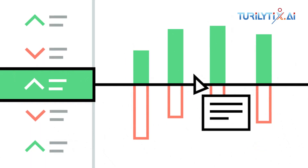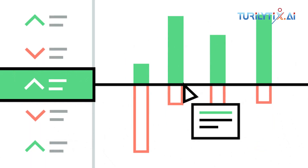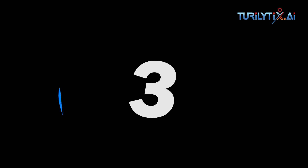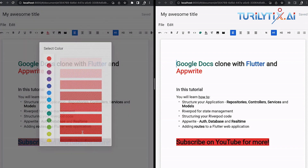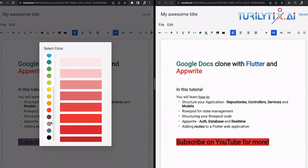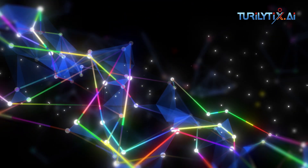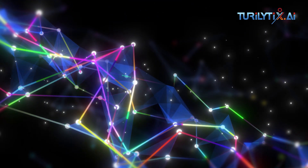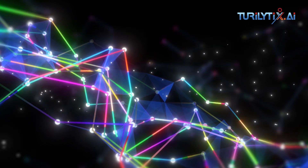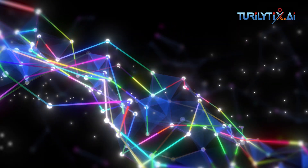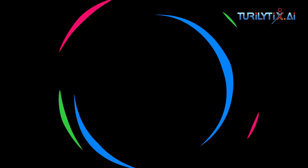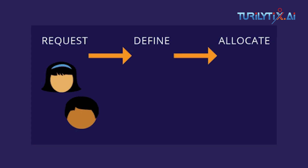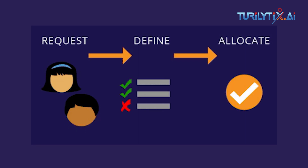Three: document structuring — a document plan is created and a narrative structure chosen based on the type of data being interpreted. Four: sentence aggregation — relevant sentences or parts of sentences are combined in ways that accurately summarize the topic.